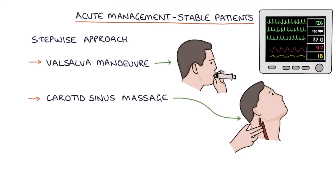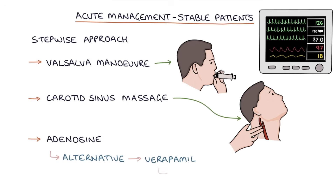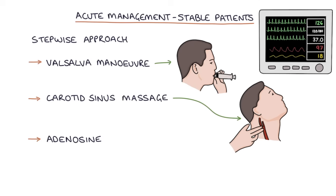If these measures don't work, the next step is adenosine. An alternative to adenosine is verapamil, a calcium channel blocker, used where adenosine is contraindicated. Usually these measures will be successful; in rare cases where they fail, the patient may need electrical cardioversion.